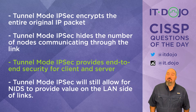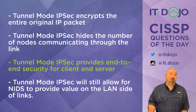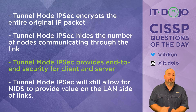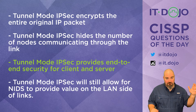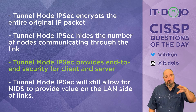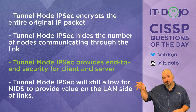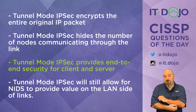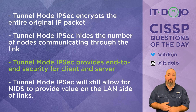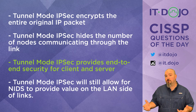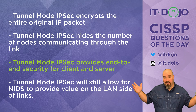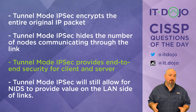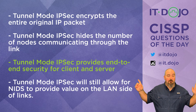The last choice is also a true statement: tunnel mode IPsec will still allow for there to be value in a network-based intrusion detection system on the LAN sides of the two links. Because that data is in plain text for that initial portion from the client to the first VPN device, and from the far-side VPN device to the server, there's an opportunity for NIDS to be in either of those locations to inspect the data. In some cases that's by design; in others it could be a problem if you have a requirement that all traffic is inspected.